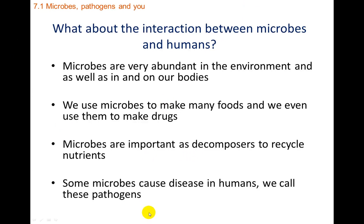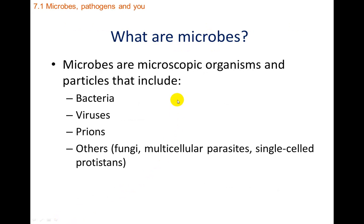Now let's talk about how microbes can affect humans and cause disease. If they cause disease in humans, we call them pathogens. Microbes are microscopic organisms, and they include bacteria, viruses, prions, fungi — like athlete's foot — multicellular parasites like intestinal worms, and single-celled animals like Giardia. All those things can cause problems.